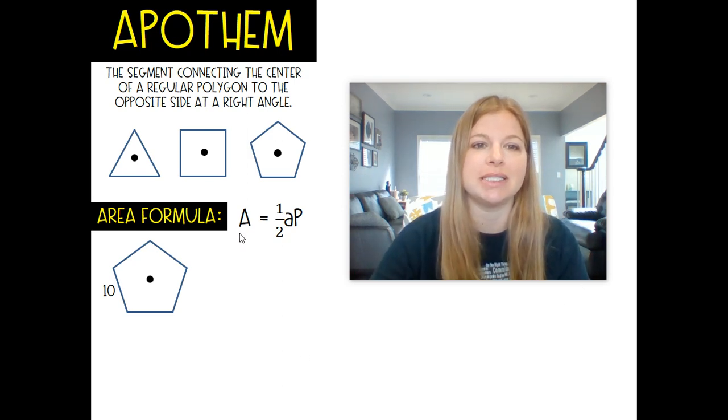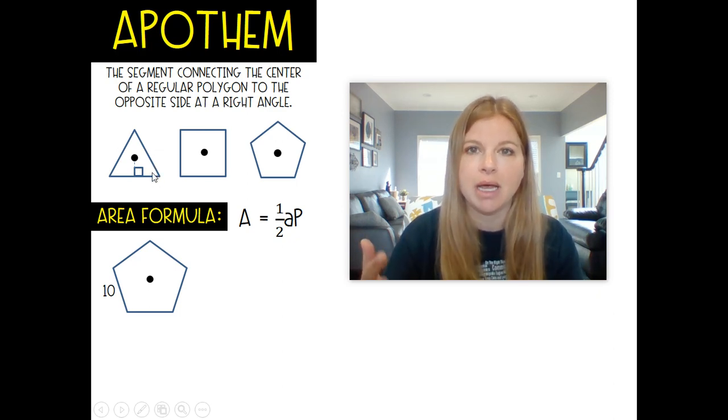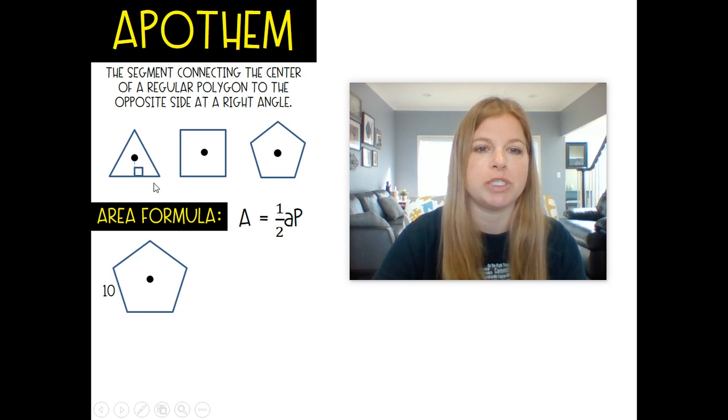It says here that the segment connecting the center of a regular polygon to the opposite side at a right angle, that's what the apothem is. The apothem is this segment here. However many sides there are in a regular polygon, there would be that many apothems, but of course they're all going to be equal to each other. It's a segment from the center to an opposite side at a 90 degree angle always.